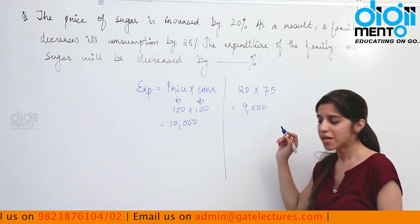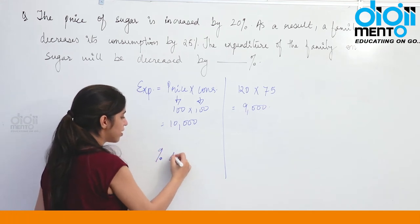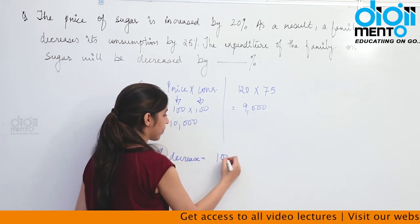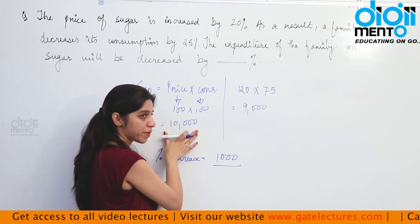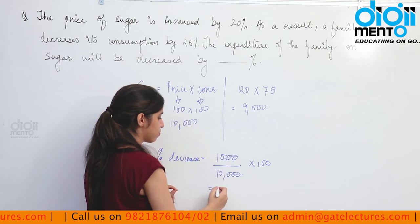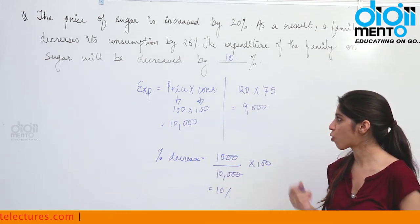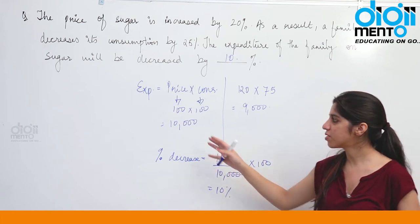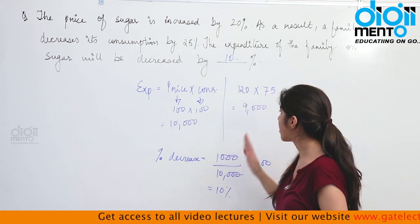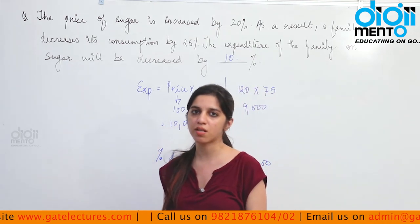120 multiplied by 75 equals 9,000. So initially expenditure was 10,000 and now it has become 9,000 — clearly the expenditure has decreased. The percentage decrease is 1,000 on a base of 10,000, which gives 10 percent. So the answer to this question is 10 percent. Assuming values to be 100 helps a lot in percentages — 20 percent increase just means add 20, 25 percent decrease just means subtract 25, and calculating percentages with a base of 10,000 is easy because things cancel out.